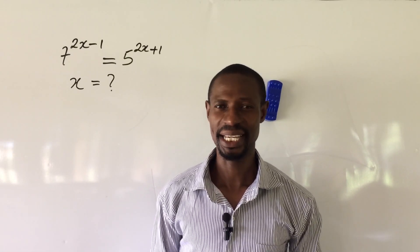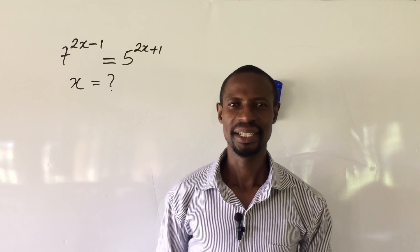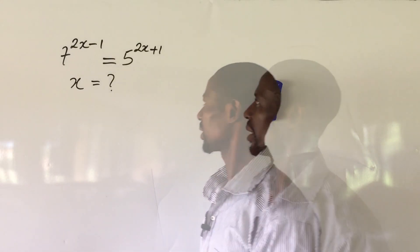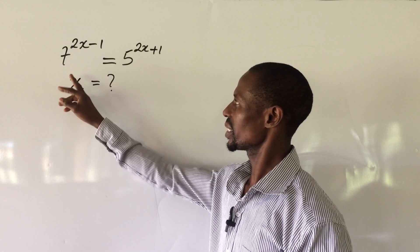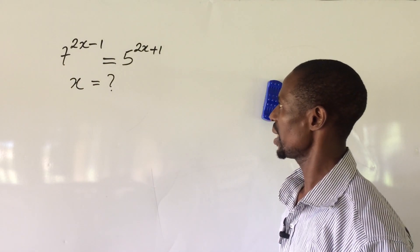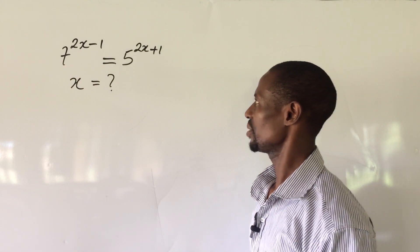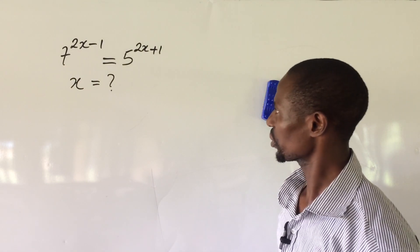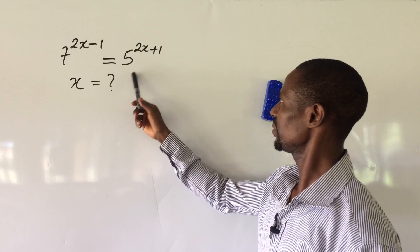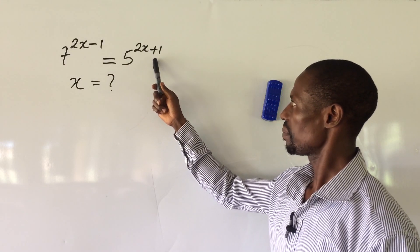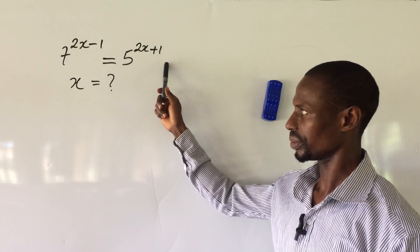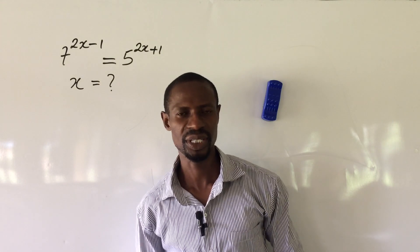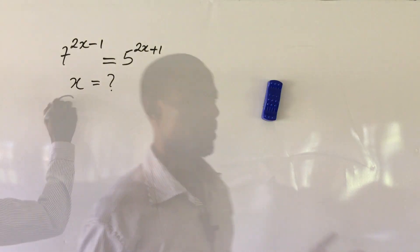Welcome everyone to my class again. Here we have an explanation challenge. The question is 7 to the power of 2x minus 1 equal to 5 to the power of 2x plus 1. What would be the possible value of x?